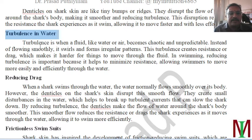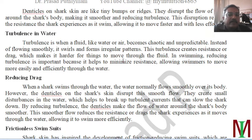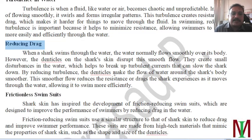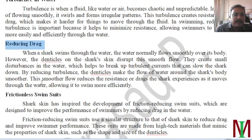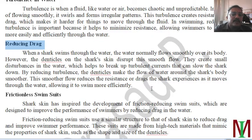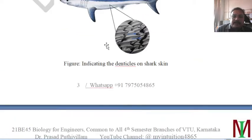The denticles reduce turbulence in water. Turbulence is when fluid like water or air becomes unpredictable instead of flowing smoothly — it swirls and forms irregular patterns, creating resistance. The denticles also reduce drag. When a shark swims, the denticles disrupt smooth flow and create small disturbances that break up turbulent currents, making the overall flow of water around the shark's body smoother and reducing resistance, allowing the shark to swim more efficiently.